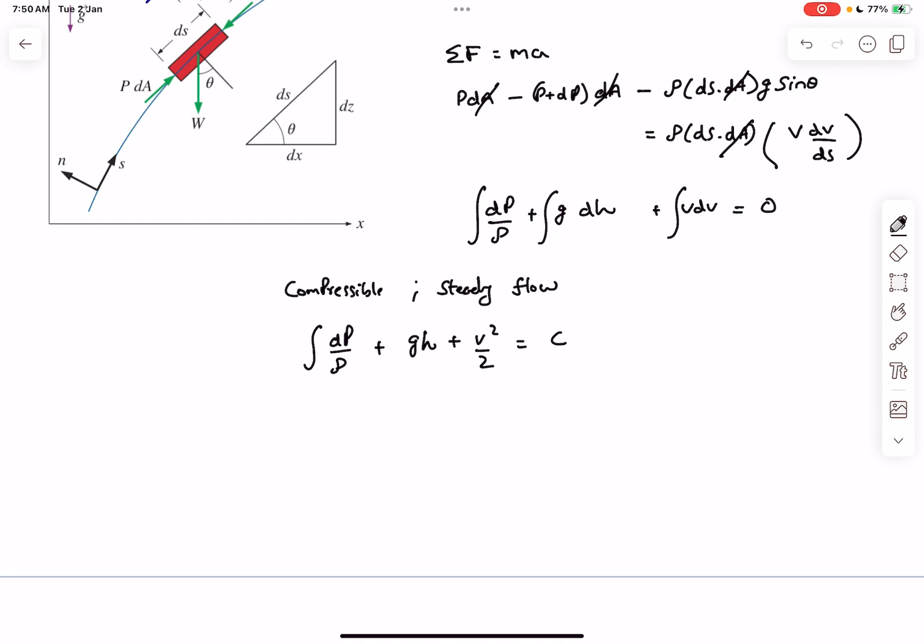To take some examples, if it is given that the process is isothermal and the fluid is an ideal gas, then you might be familiar with the formula pV = ρRT. Since temperature is constant, you can write ρ as p divided by some constant.